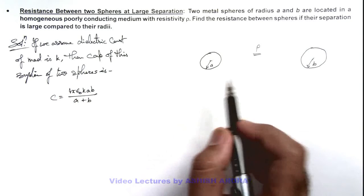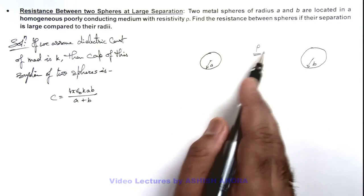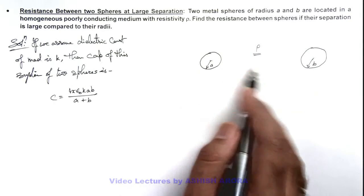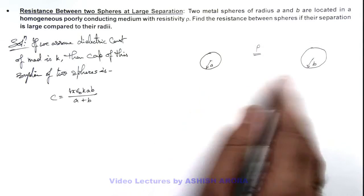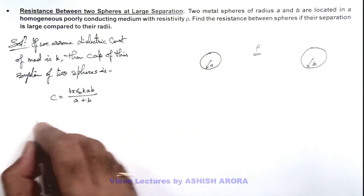Across these two spheres this behaves as a leaky capacitor because the medium between the two conductors is having some resistivity so charge between the spheres will leak through it. So we also know that...